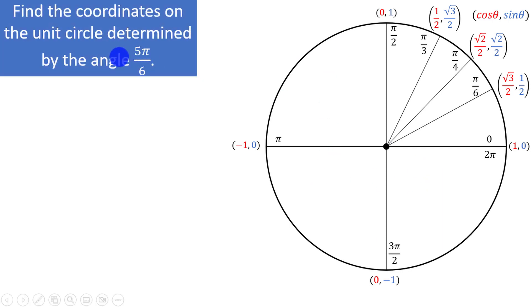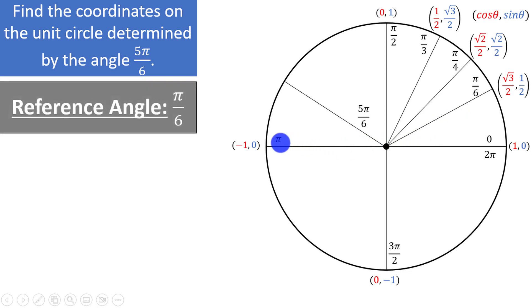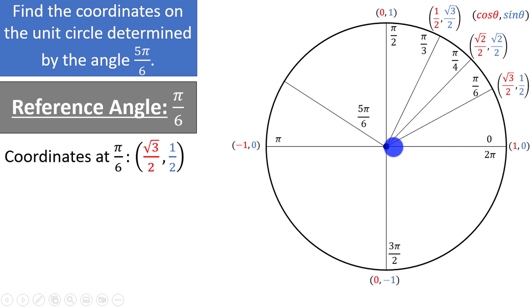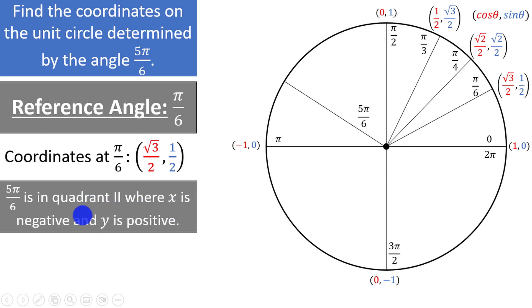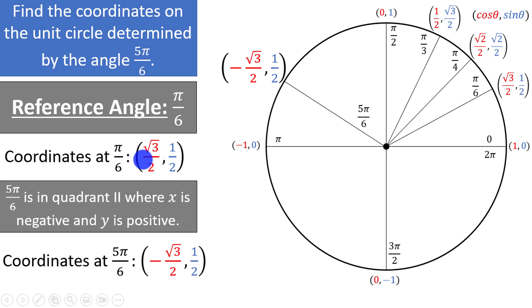Let's say we are asked to find the coordinates on the unit circle determined by 5 pi over 6. Since 6 pi over 6 corresponds to pi, 5 pi over 6 must be just above pi over 6 past pi over 2, in the second quadrant. The reference angle for 5 pi over 6 is pi over 6, because we are pi over 6 radians above the x-axis near pi. The coordinates at pi over 6 are (√3/2, 1/2). Since we are in quadrant 2, x is negative and y is positive. So the coordinates at 5 pi over 6 are (−√3/2, 1/2).